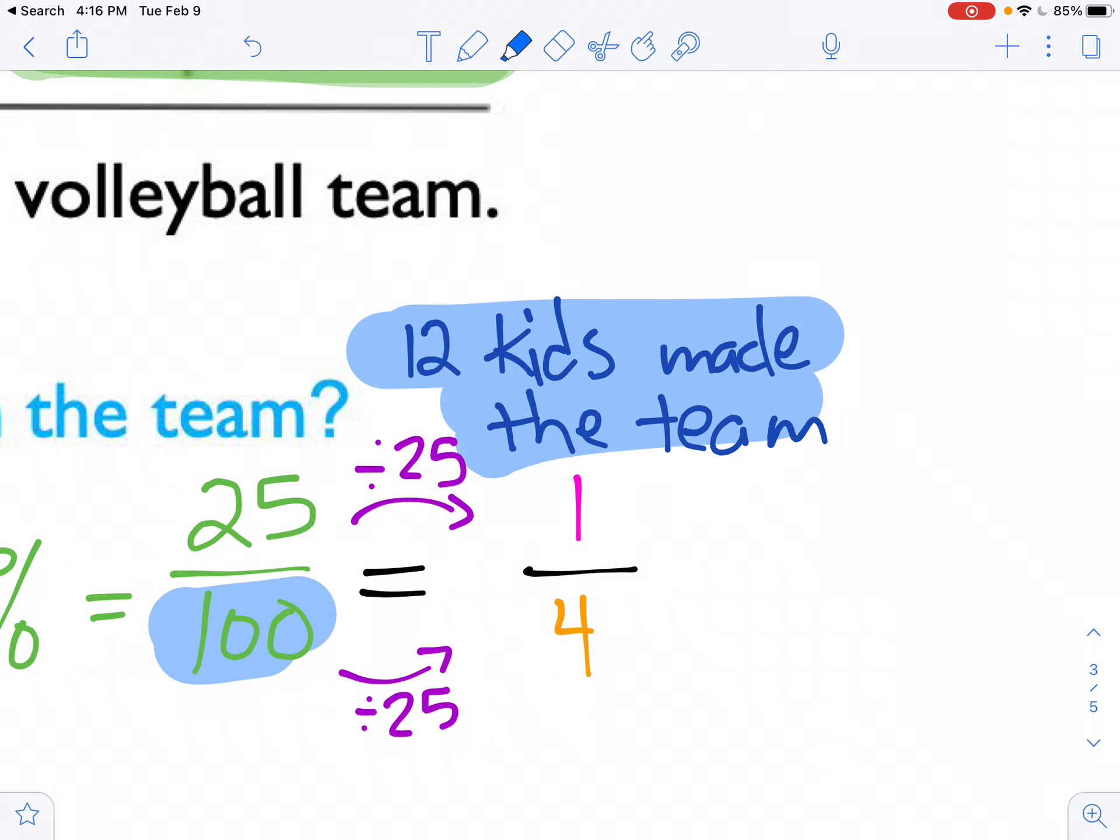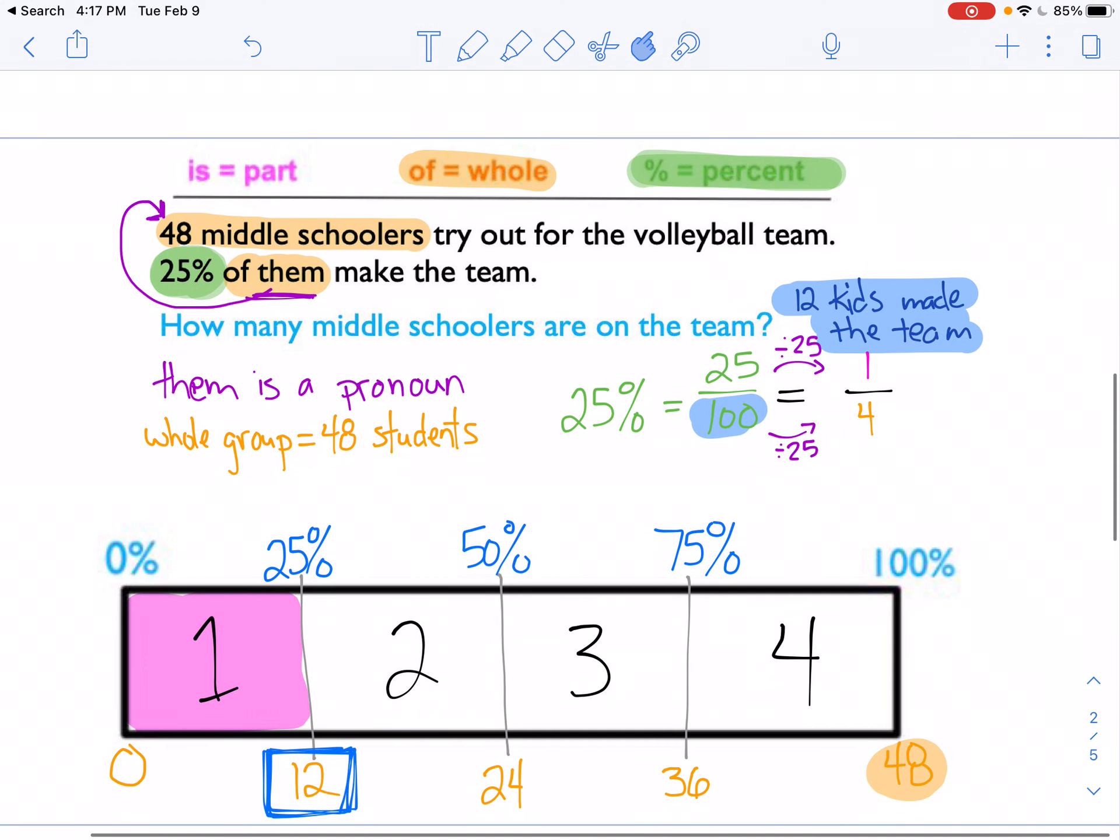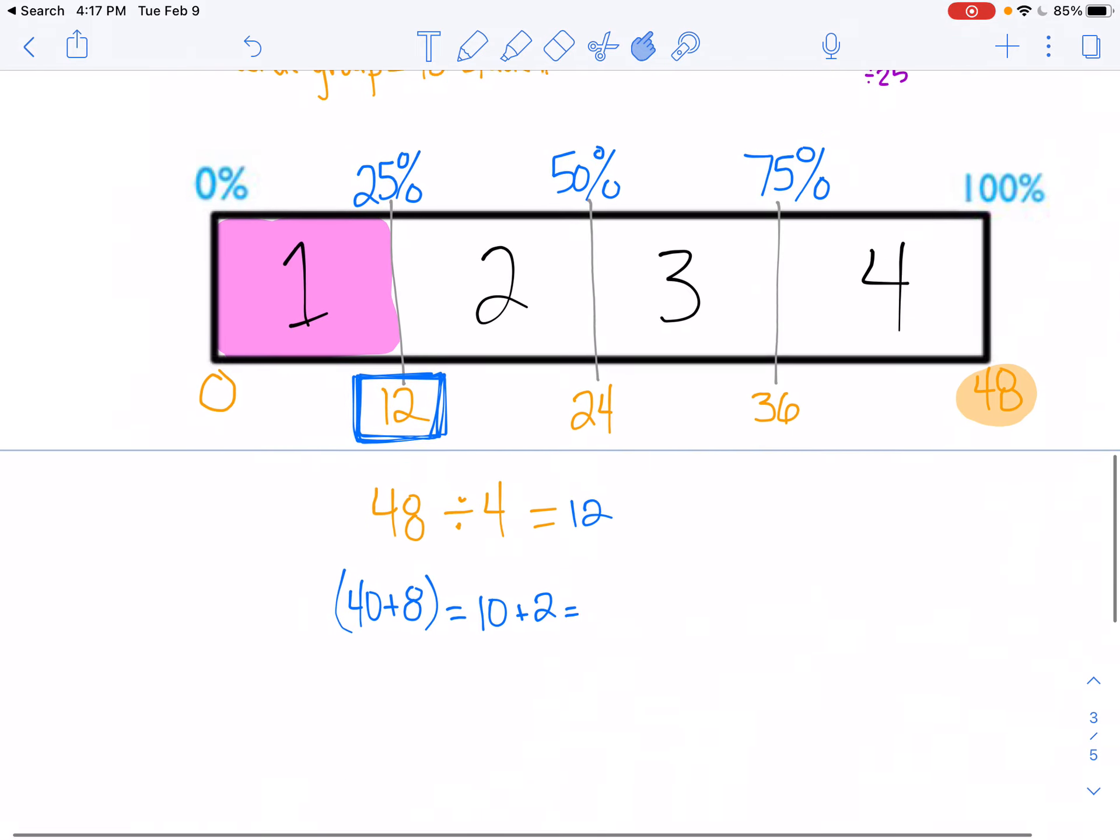So again, the trickiest part to these, we've done a bunch of these problems. The trickiest part in words is figuring out what the percent is, although that part's not tricky. It's figuring out that other number. So in 48, was that part or was that whole? All right. Let's look at one more example.